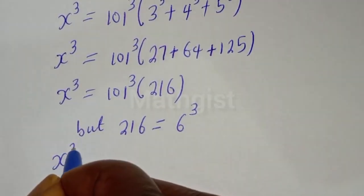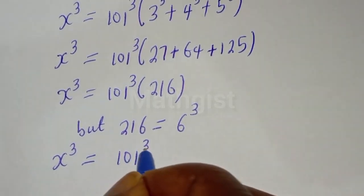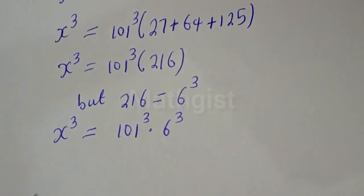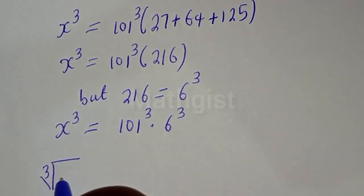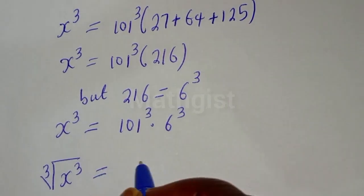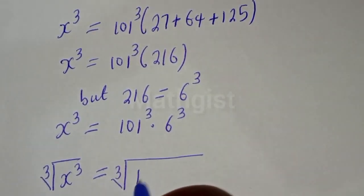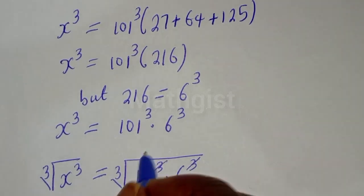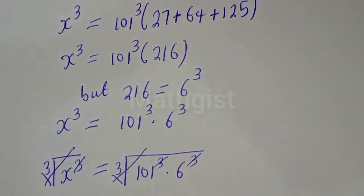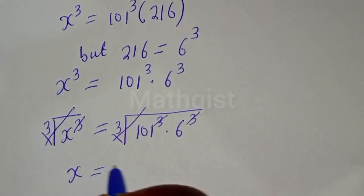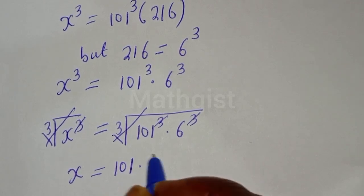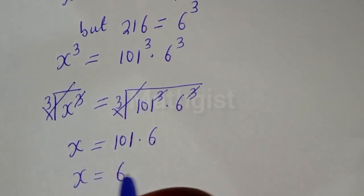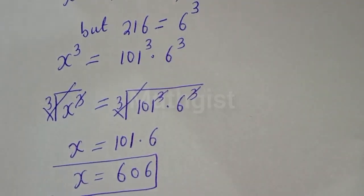So S raised to power 3 is equal to 101 raised to power 3 multiplied by 6 raised to power 3. Now let's take the cube root of both sides. The cube roots cancel, giving us S is equal to 101 multiplied by 6, and 101 multiplied by 6 is 606. This is the final answer.